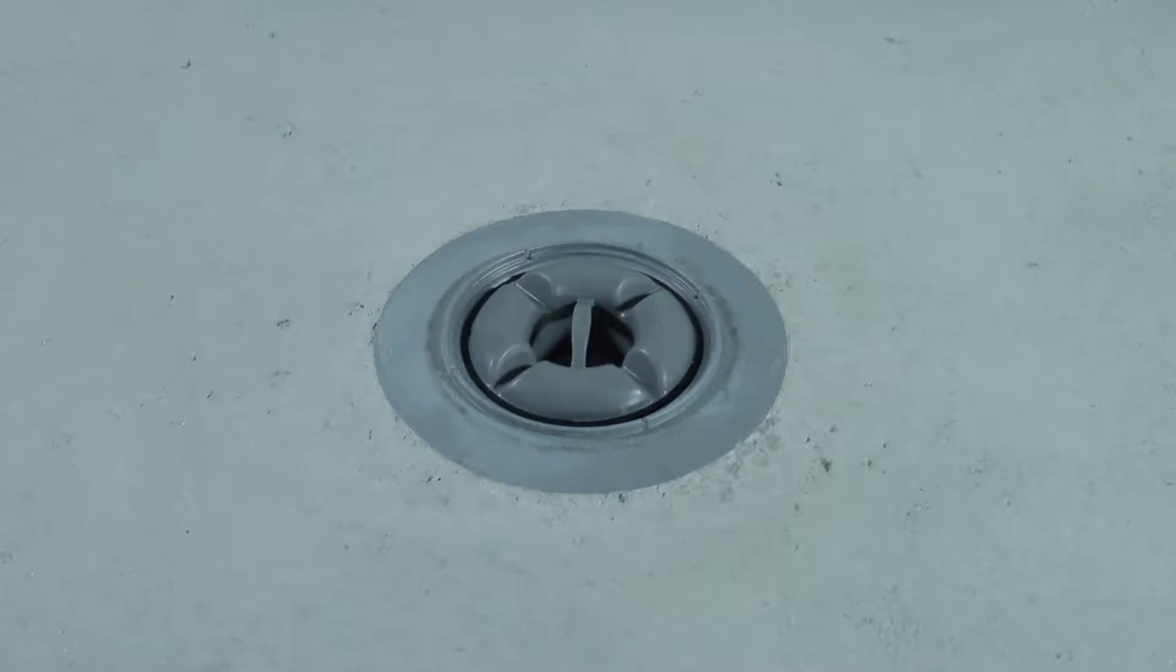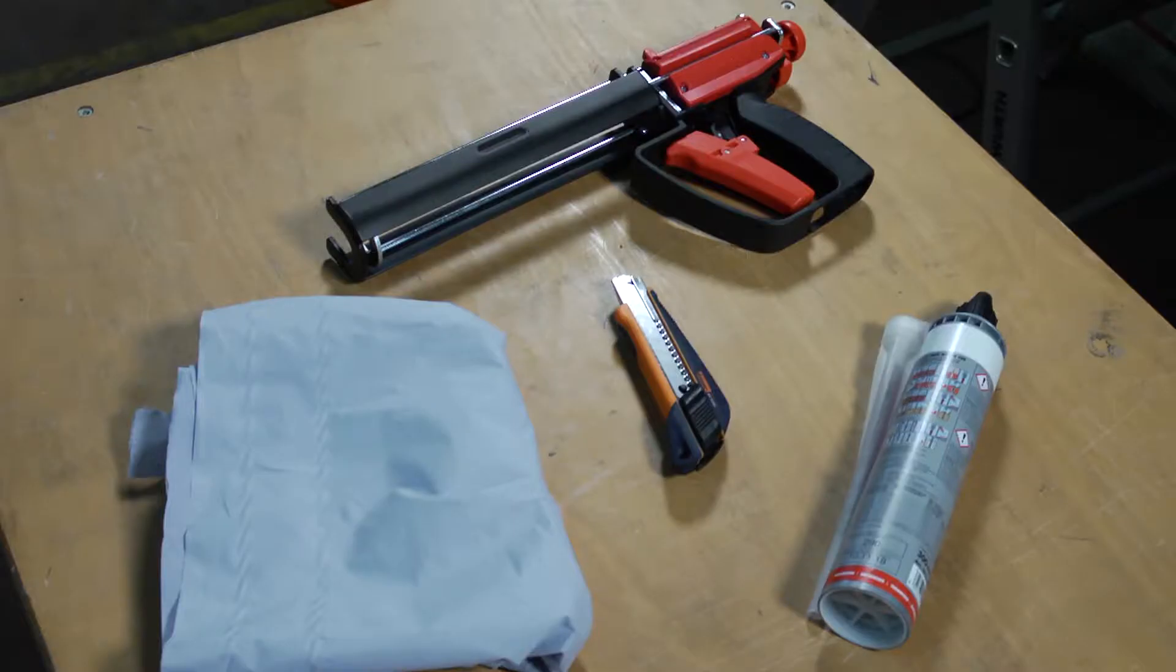Gluing a waterproofing sealing membrane to a Kessel drain is a quick and easy process. Important is that the screed layer has fully dried before any work begins. Information concerning the correct adhesive to use can be found in the installation instructions.